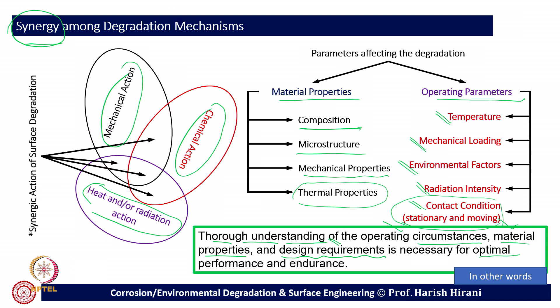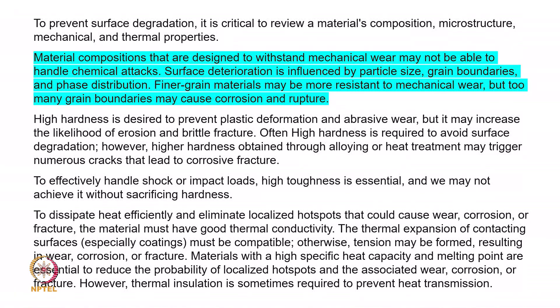To prevent surface degradation, it is critical to review material composition, microstructure, and mechanical and thermal properties. Materials designed to withstand mechanical wear may not handle chemical attacks. Surface deterioration is influenced by particle size, grain boundaries, and phase distribution — finer grain material may resist mechanical wear, but too many grain boundaries may cause corrosion or rupture. High hardness prevents plastic deformation and abrasive wear but may increase the likelihood of erosion and brittle fracture.